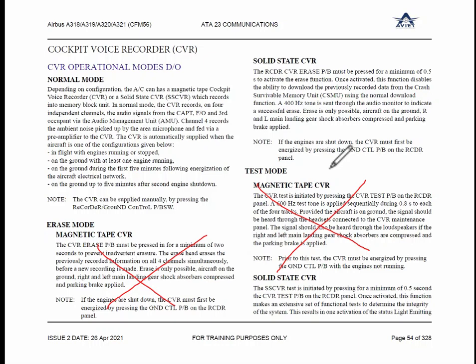Three channels — pilot, copilot, and first observer — are coming through the audio management unit. Because all audio originating from the pilot station, from the first officer station, and from the first observer station comes to the audio management unit. In the audio management unit, there is a special card used for this purpose which extracts this information and routes it to CVR. The fourth channel is an area microphone which is not going through the AMU — it is directly connected to the CVR.